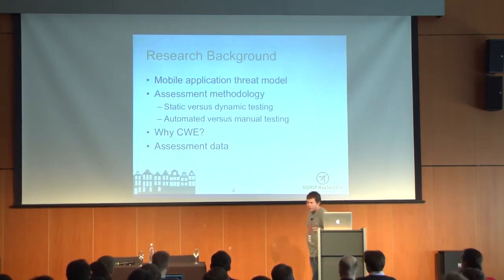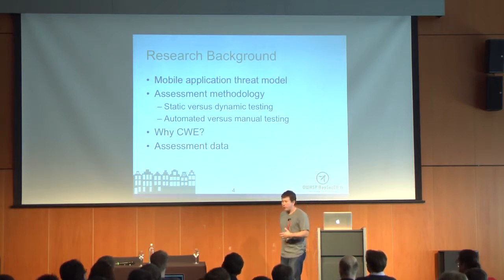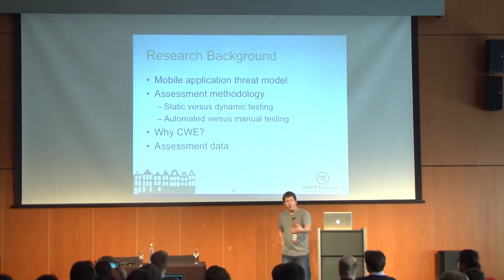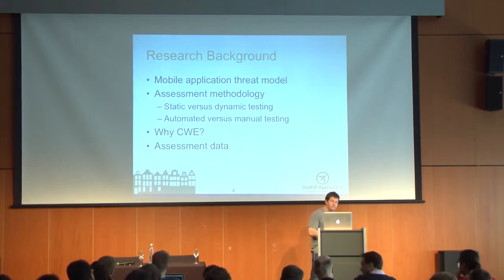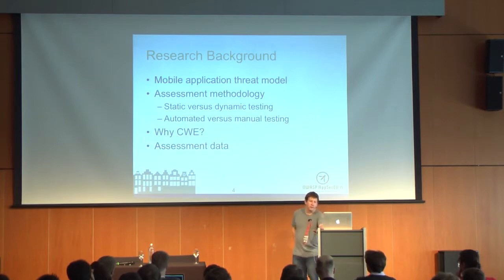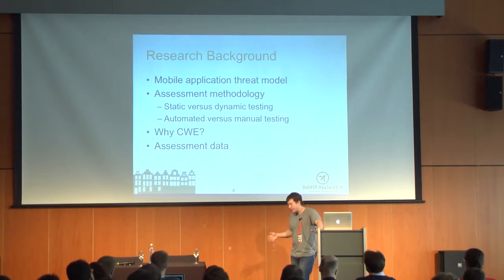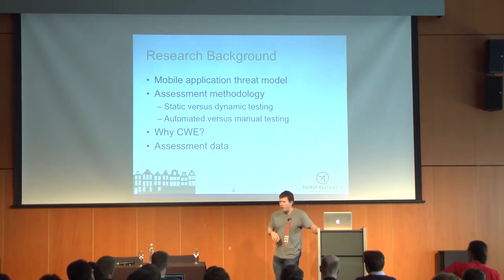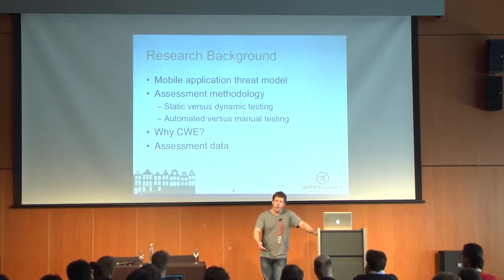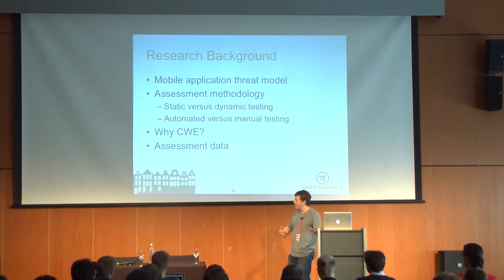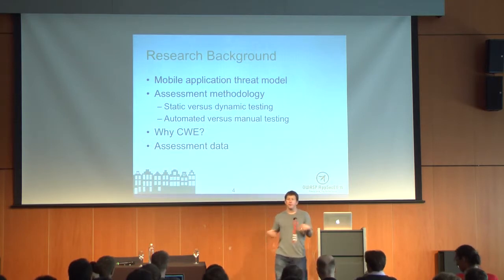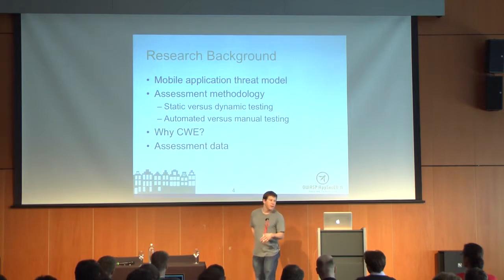I'll talk a little bit about our view of the mobile application threat model, which probably applies to most of the applications we're looking at here. Obviously you can have situations with a more complicated or simpler threat model, but most mobile applications tend to look like the one we'll talk about. We'll also talk about our assessment methodology. These are assessments where there was both dynamic testing and static testing, as well as a manual component and an automated component, and where we looked at both the code on the device as well as the supporting web services. We normalized the data to get a pretty comprehensive look at the security of a mobile application system.